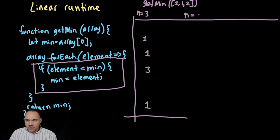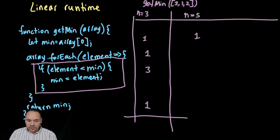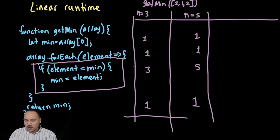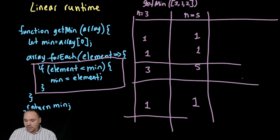For an array of five elements, the block inside the forEach executes five times instead of three. The middle loop body always executes n times. If n is 10, it executes 10 times; if n is one million, it executes one million times. The one or two constant statements outside the loop become negligible compared to one million iterations, which is why we simplify and don't give them much weight.